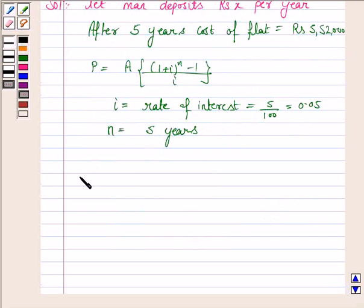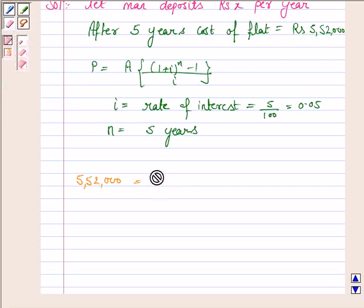So now, the principle after 5 years will be 5,52,000 and x is the amount which deposits every year.